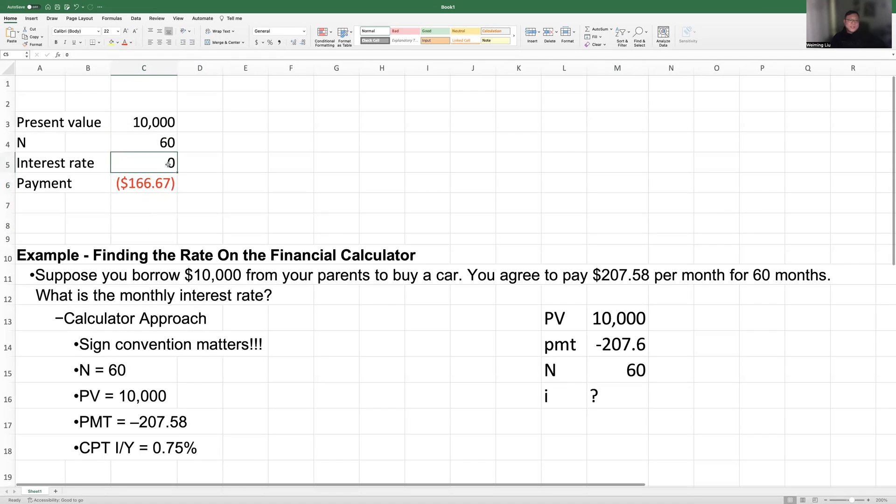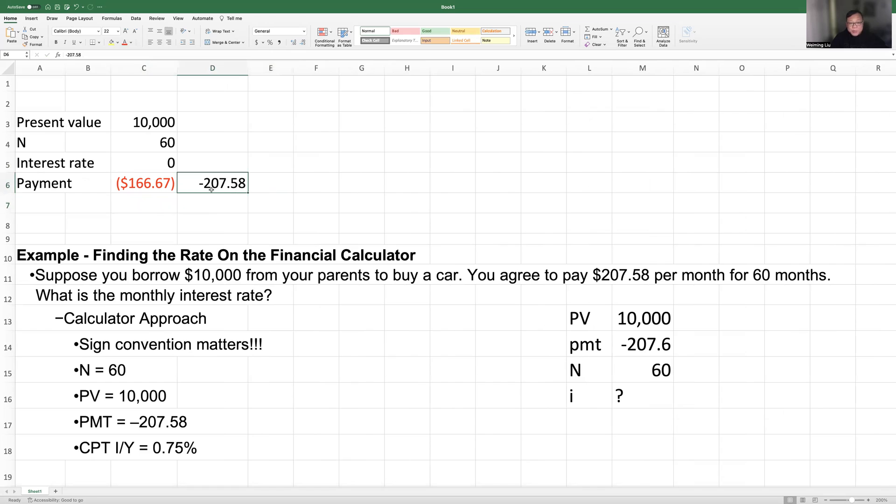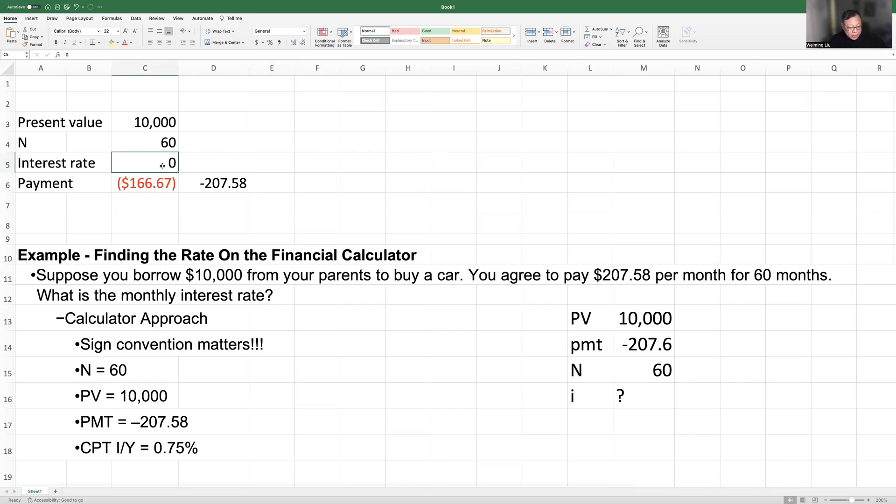So, of course, the interest rate is not zero. We want to know what's the interest rate. And our target, this payment is negative 207.58. So we want the payment to be negative 207.58. So how can we do this? Well, we are going to do something called trial and error. So this is one approach. In the textbook, they introduce this trial and error approach. So what are we going to do here? Well, let's make this to be 1%.